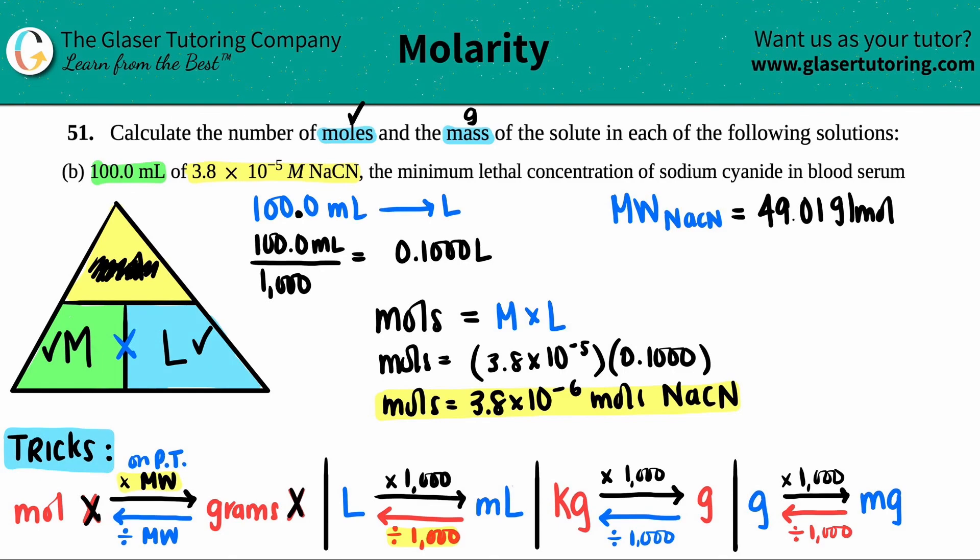So to get those grams, I take the moles that I have, right? So 3.8 times 10 to the negative six, and I times by the molecular weight, 49.01. And that's going to get me grams. If I use the units, this is a mole and this is a gram per mole. So look, I have a mole on the top and the mole on the bottom, right? Because this is basically over one. So these cancel. And that's why when you do this, you are left with just grams.